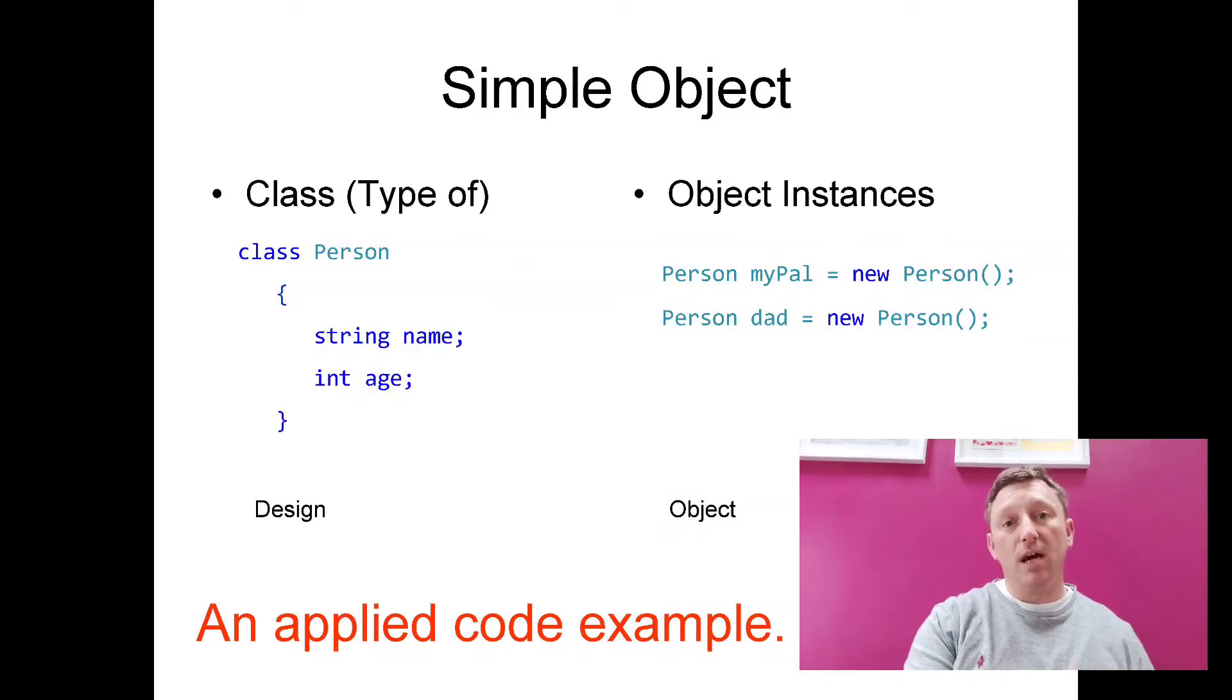On the right-hand side, we have how we would make that object. We've made two. One of them, we've decided to make one object called my pal. And the second one, we decided to make a person called dad. And in the next diagram, we'll have a little discussion about how we go from the class, the design, to the object, the reality.